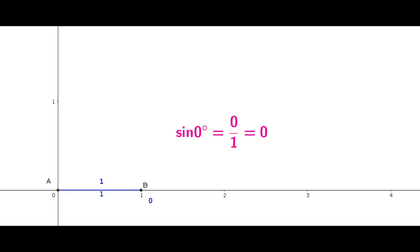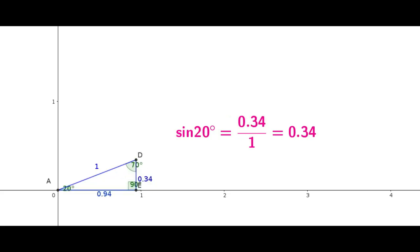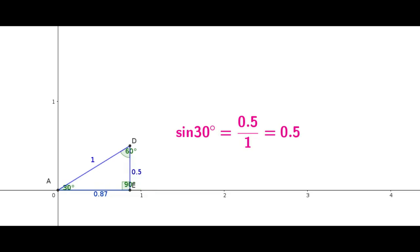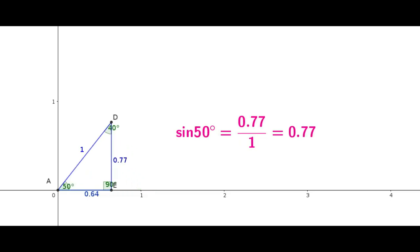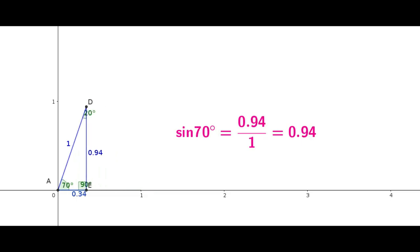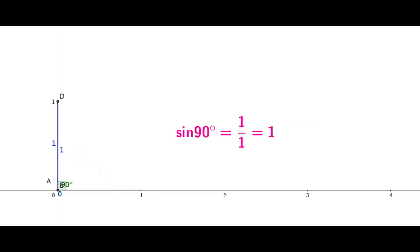Let us explore what happens if alpha becomes 90 degrees. As it approaches 90 degrees, you observe that the opposite is becoming equal to the hypotenuse and the adjacent is becoming 0. As opposite and hypotenuse are becoming equal, the value of the ratio is becoming 1. Therefore, the value of sine 90 degree is 1. This is how the standard angles for sine ratios are established.